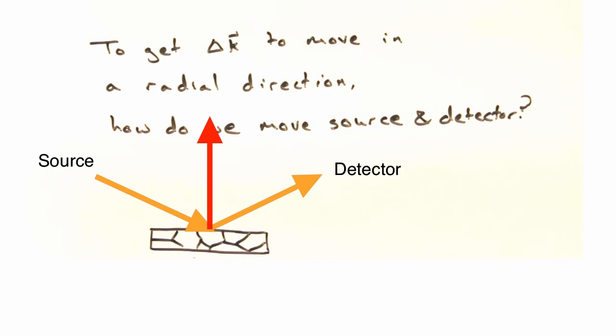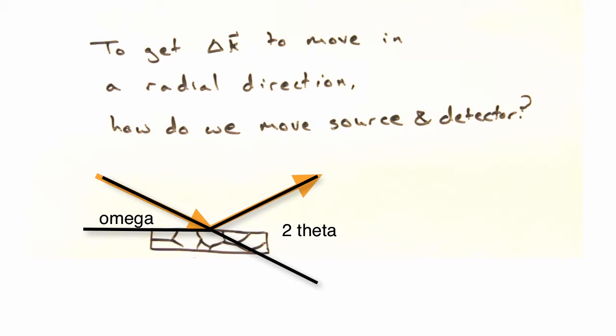And we usually define our k vector at this angle, omega, with respect to the sample plane, and k' is defined in terms of this 2-theta angle, so that when the source and detector move, you change omega into 2-theta. Which is why we call this technique an omega-2-theta scan.